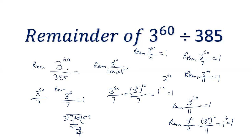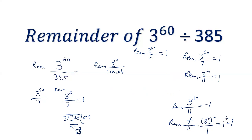So we have seen that 3 power 60 divided by 5 is 1, divided by 7 is 1, and divided by 11 is 1. When a number divided by different denominators gives the same remainder, by the Chinese Remainder Theorem, 3 power 60 when divided by 5, 7, and 11 — all three numbers — will also give remainder as 1. So its remainder will be 1 only.